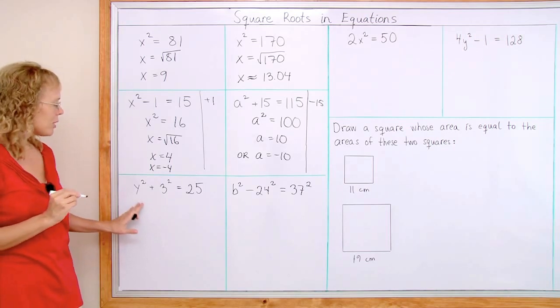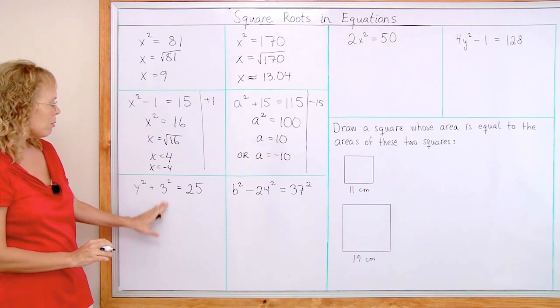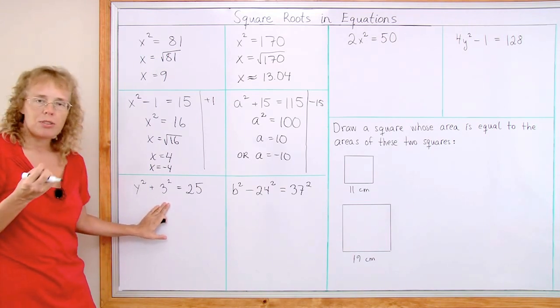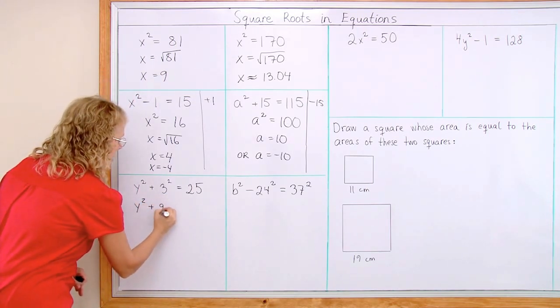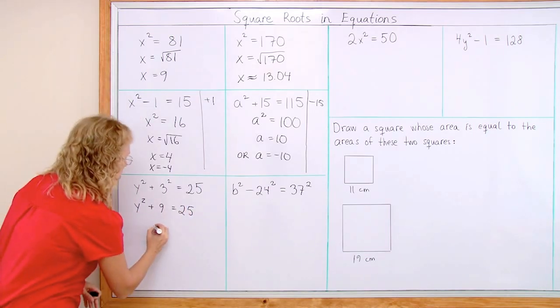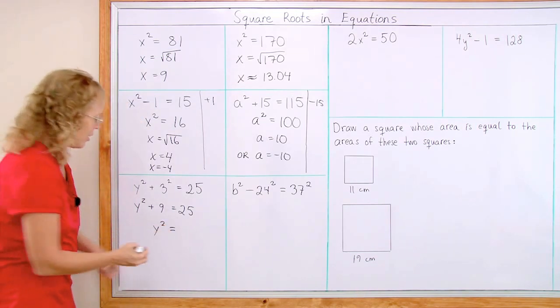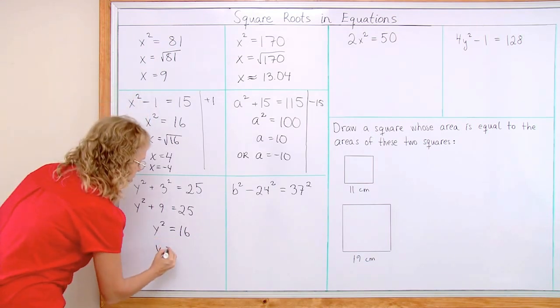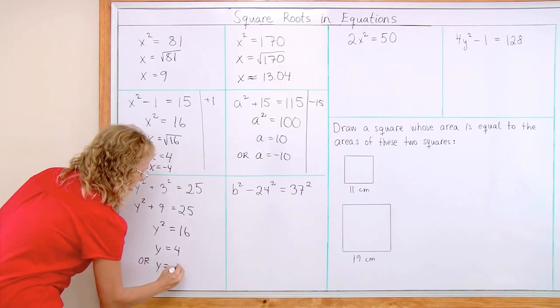Over here, the same thing happens. We need to first have y squared alone on this side. So I will subtract this much. But before I do that, I can simplify this. So let me first simplify. y squared plus 9 equals 25. Now, I subtract 9 from both sides. So y squared is now alone. And then 25 minus 9 would be 16. And now, you can see the solution, right? y equals 4. Or there's the other negative solution too.